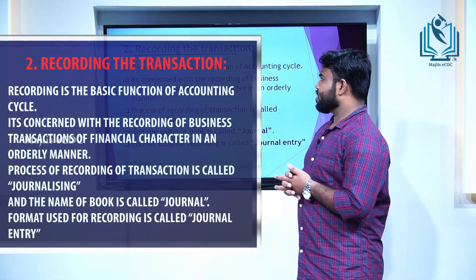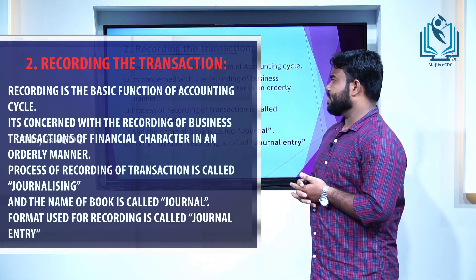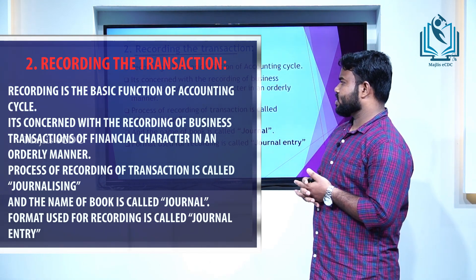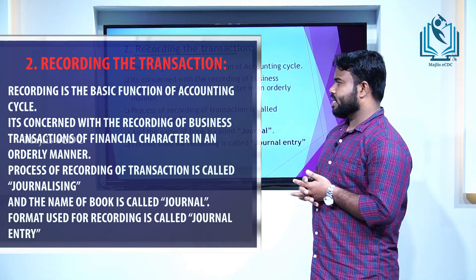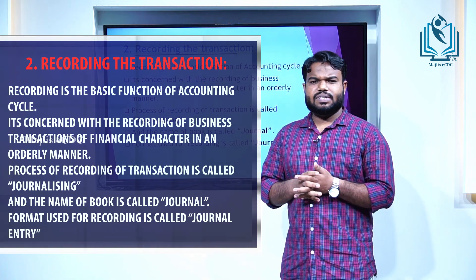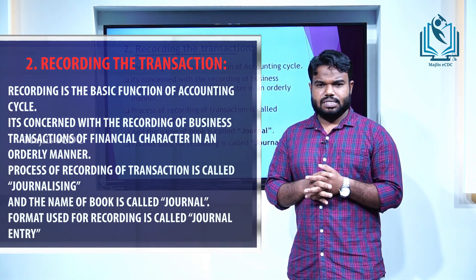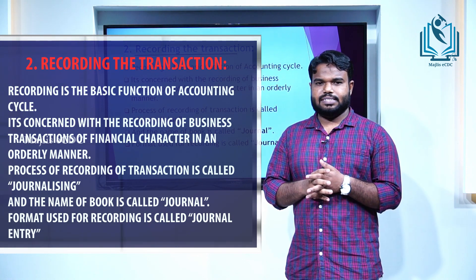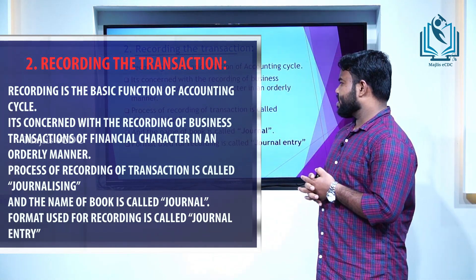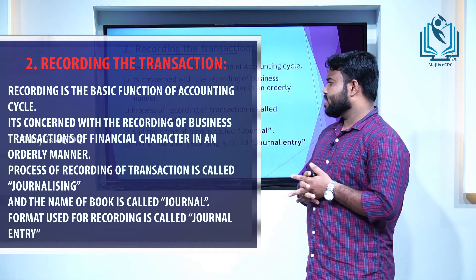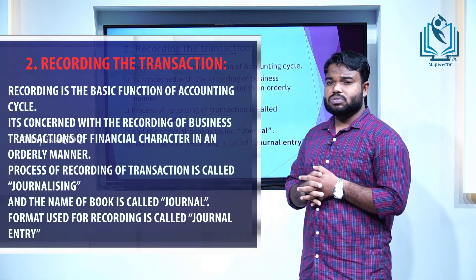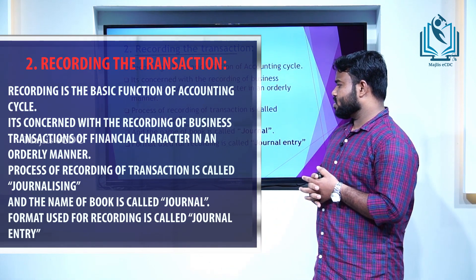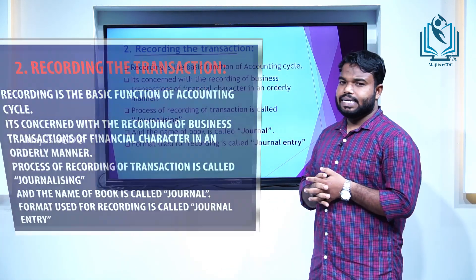The next process is recording the transaction. Recording is the basic function of the accounting cycle. It is concerned with the recording of business transactions of financial character in an orderly manner. After the identification of business transactions, we can go through the recording in a systematic order. The process of recording transactions is called journalizing, and the book used for this purpose is called journal. The format used for recording is called journal entry.